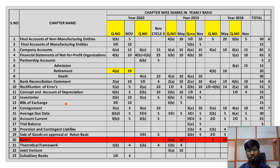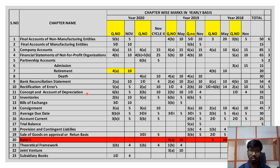So for Module 1, you need to be clear on five topics: bank reconciliation statements, rectification of errors, consignment, average due date, and account current. After that, you also need to focus on depreciation, which has an average weightage of about 10 marks. After the removal of ratio analysis, they are giving some weightage to depreciation. The remaining chapters are very rarely asked, so focus clearly on these key topics before going to your exams.